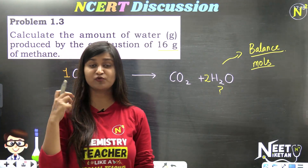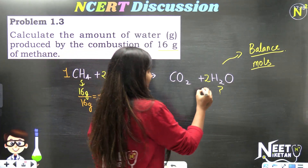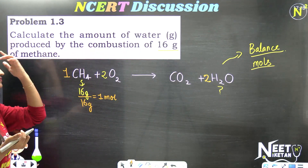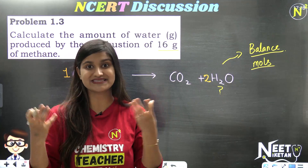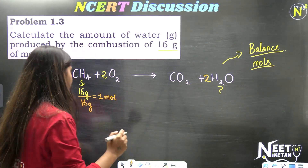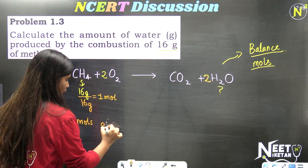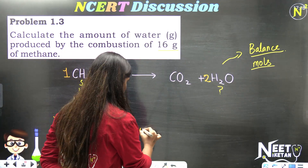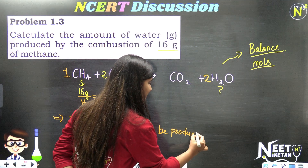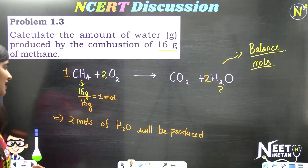So 2 moles of H2O will be produced. But we need the answer in grams, not moles. Number of moles of H2O = 2. Molecular mass of H2O = 2 + 16 = 18. So mass = 2 × 18 = 36 grams.